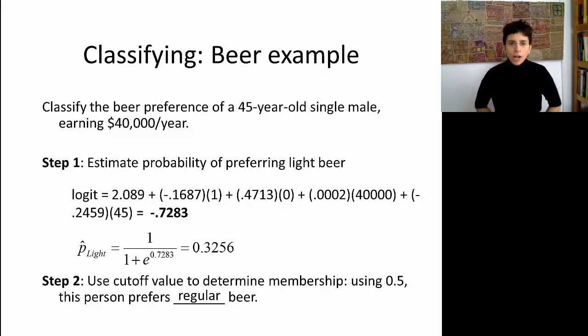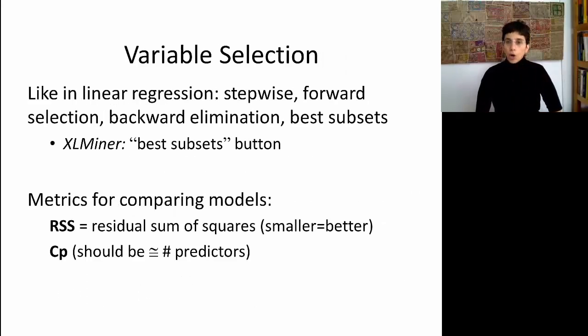Now, a question for you. Only based on this logit number, negative 0.7, could we have classified this person without going through this step of computing a probability? Think about how the cutoff threshold would map to the logit space. I'll leave that for a discussion question. All right, now what else is similar between linear and logistic regression? Variable selection.